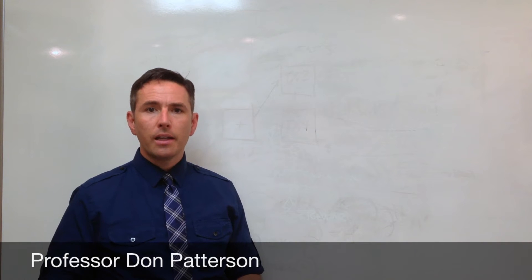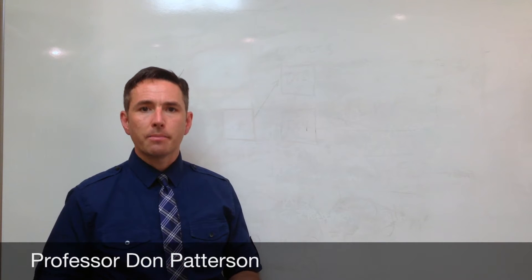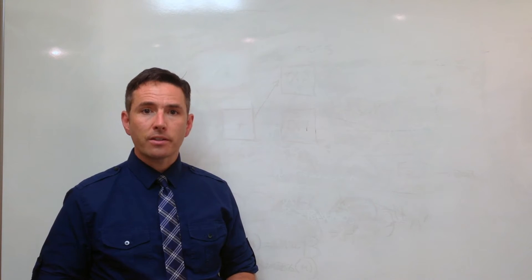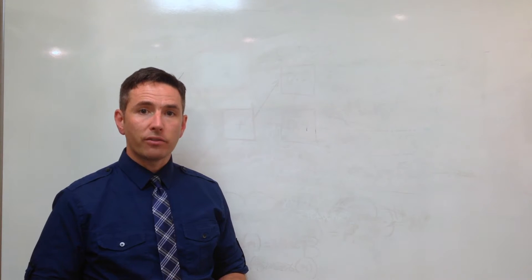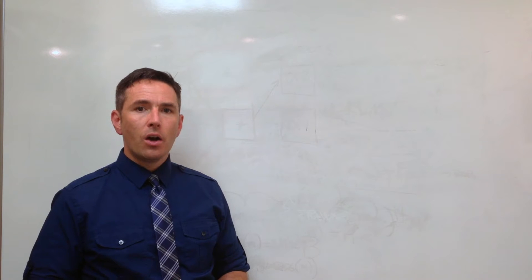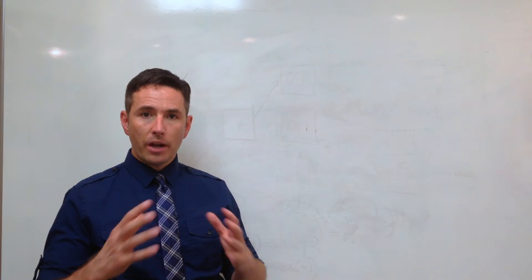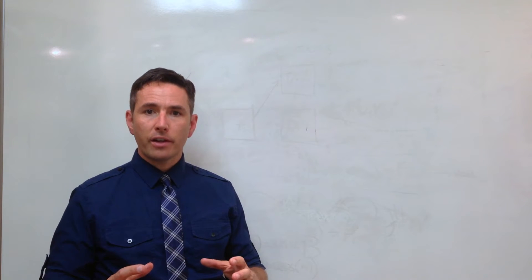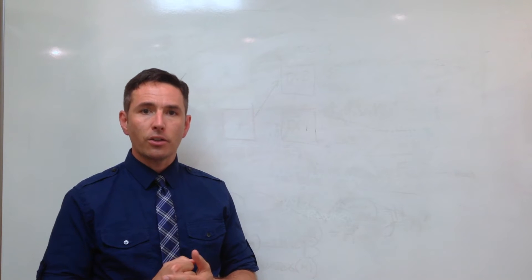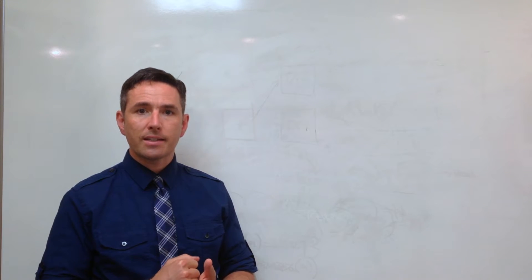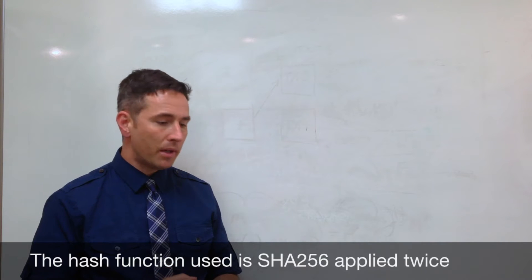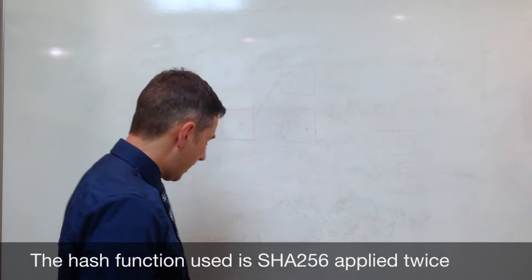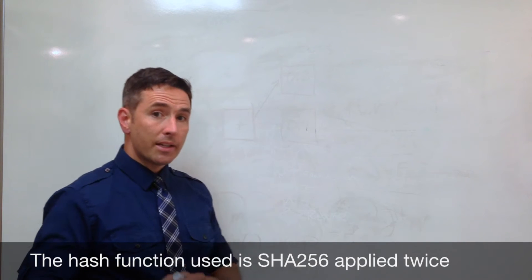We know that a block in the blockchain is made up of many specific transactions, and we've looked at those transactions individually. Now let's look in detail at what the block itself looks like. The block generally consists of a number of different transactions together, and then it's sealed by providing a nonce which creates a digital signature using the SHA-256 algorithm.